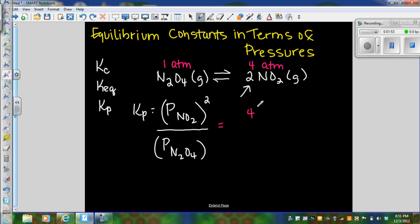So what we'll do is we'll substitute into the expression. So I'm going to take four. Again, we're not using units. That four will be squared because of the coefficient of two. And then dinitrogen tetroxide, that's going to be one.